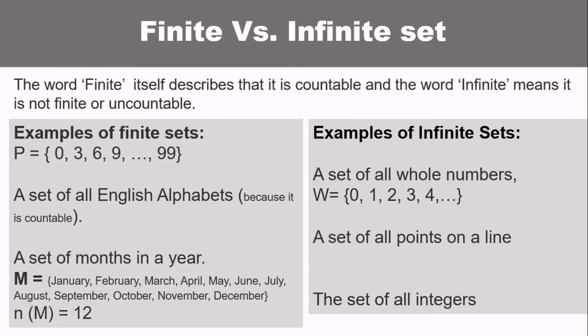Finite versus infinite set. What's the difference? The word finite itself describes that it is countable and the word infinite means it is not finite or uncountable. Examples of finite sets: Set P with elements from 0 to 99. That is finite set because we know where it starts and ends. A set of all English alphabets, because it is countable. A set of months in a year, that's also a finite set.